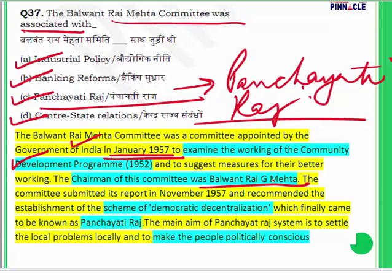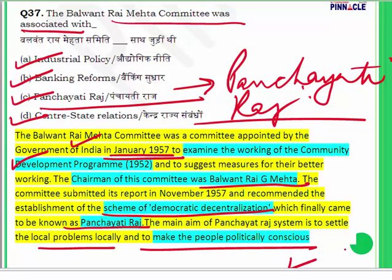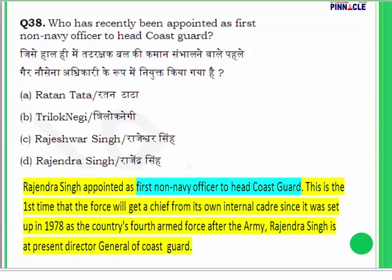The committee recommended establishing a scheme of democratic decentralization — where power is given at the lower level rather than being concentrated in the center. This system of democratic decentralization came to be known as Panchayati Raj. The main aim of Panchayati Raj is to settle local problems locally and make people politically conscious.